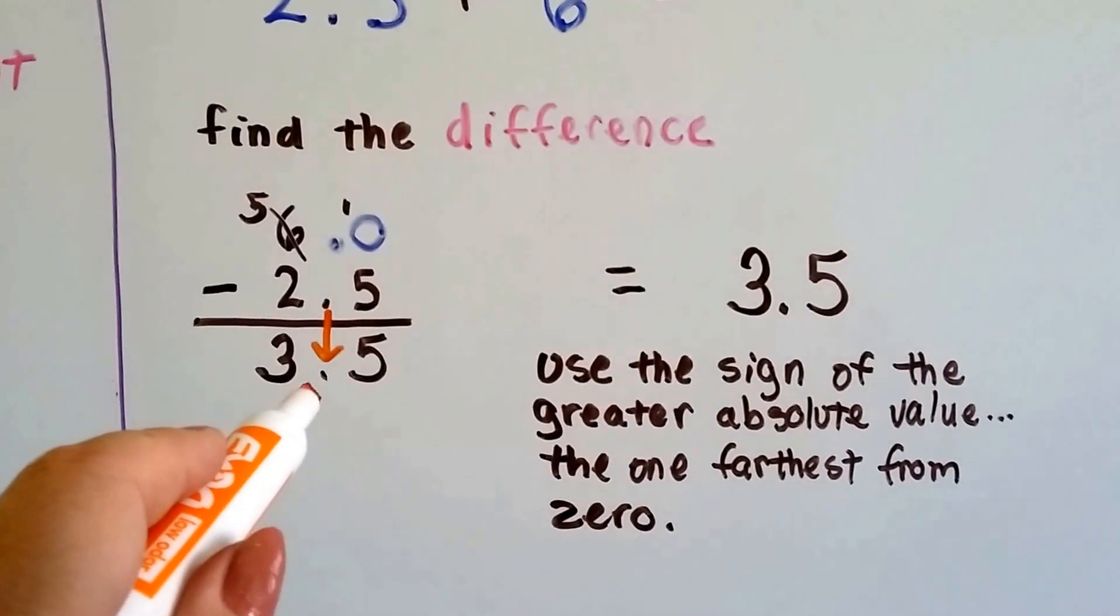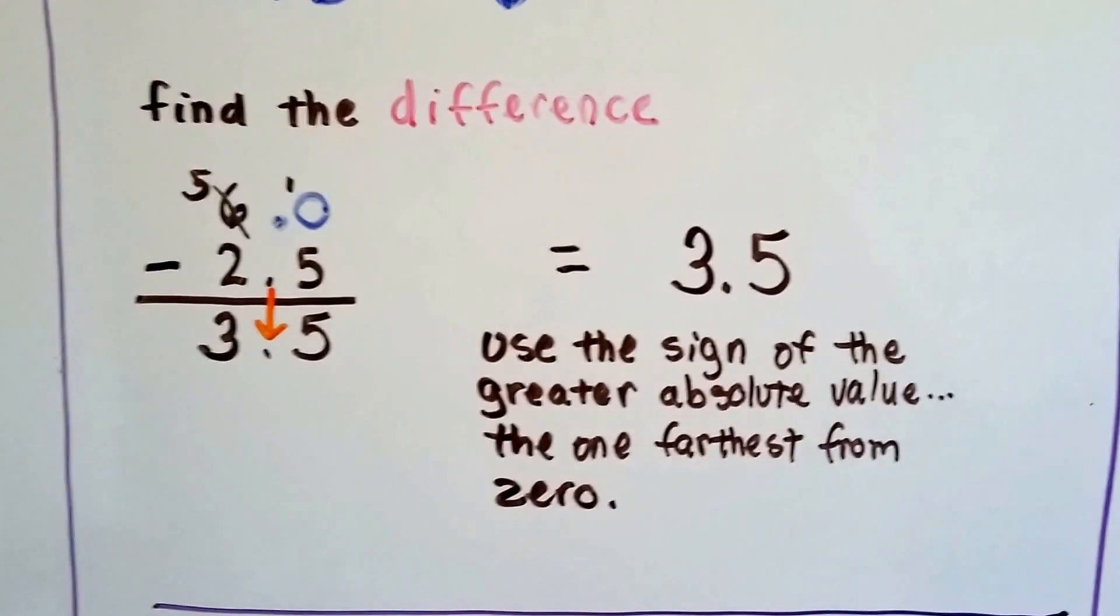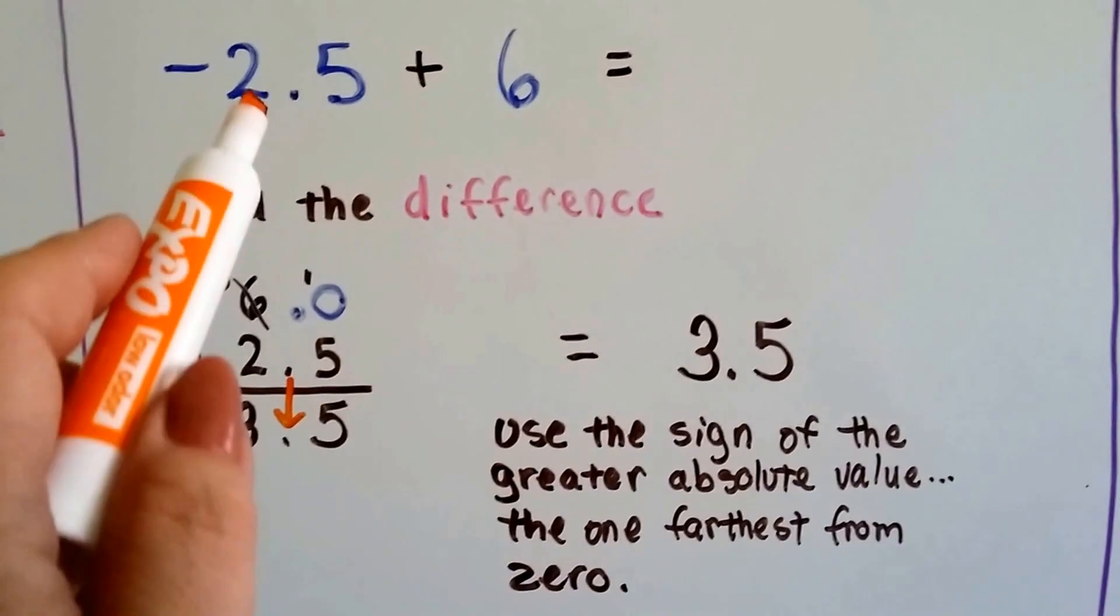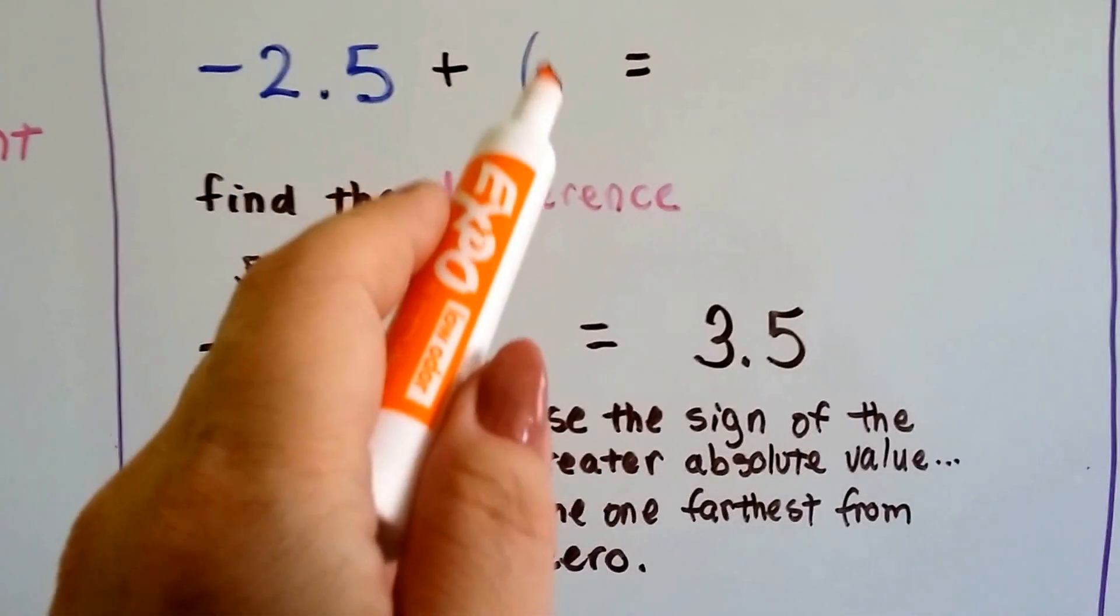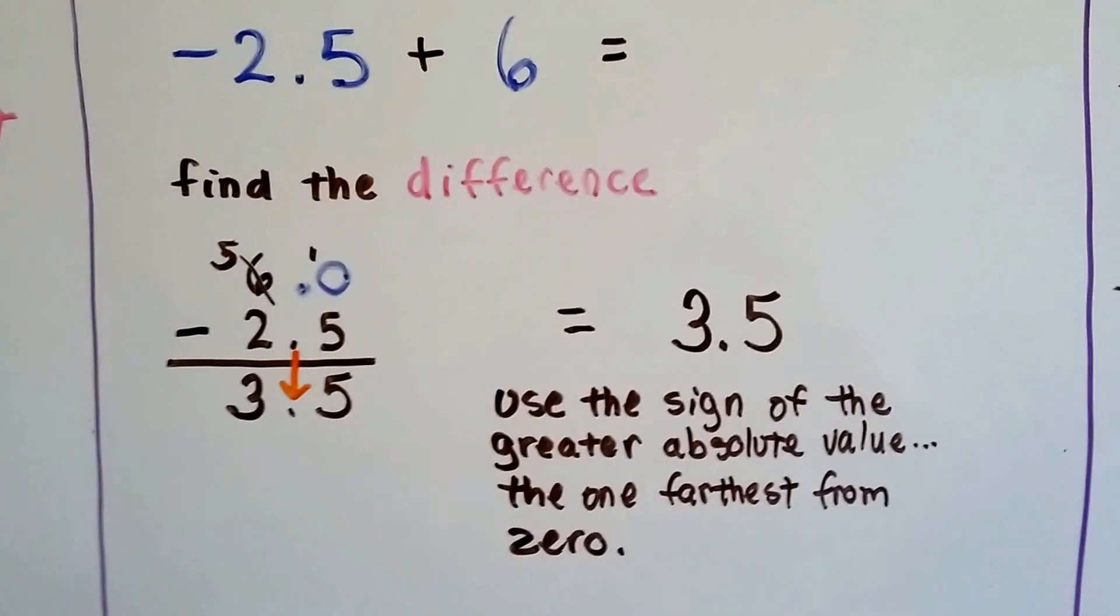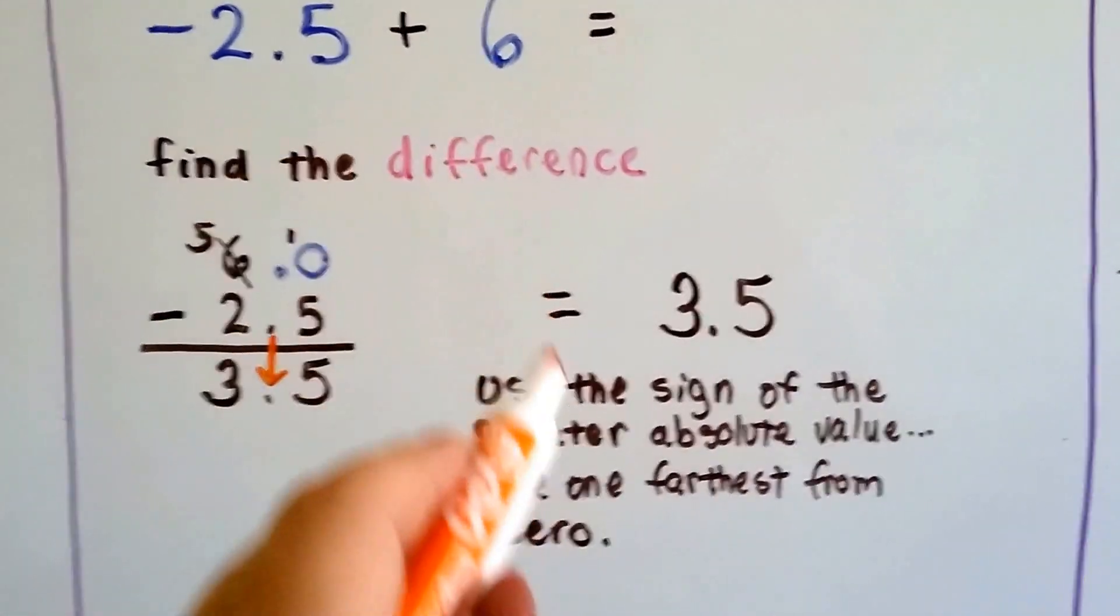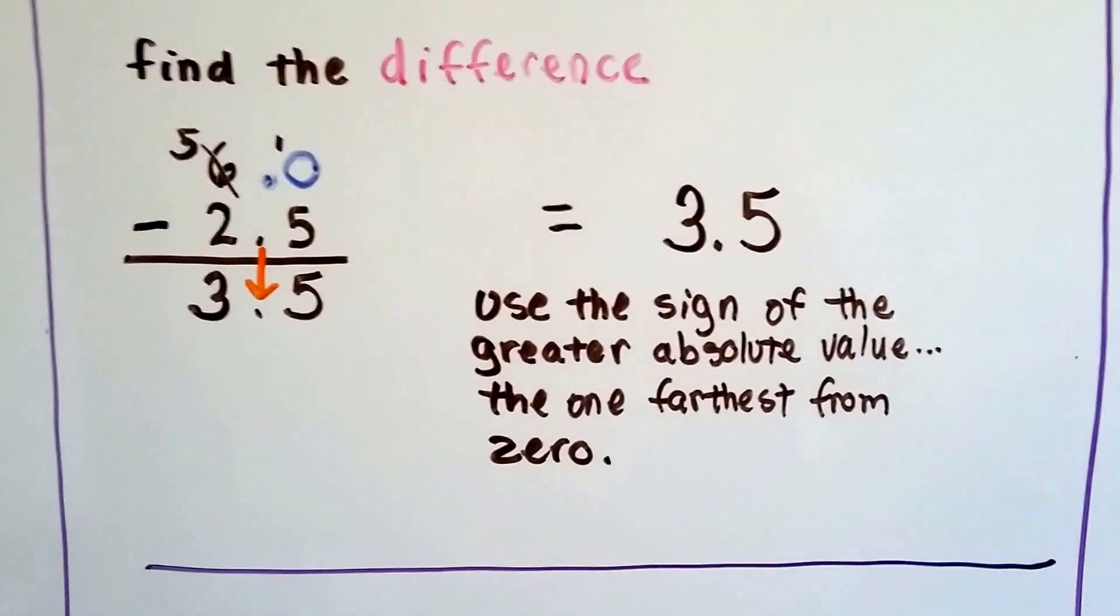because we dropped the decimal point straight down. And we used the sign of the greater absolute value that was in the equation, which is bigger and farther away from 0. 2 and a half, 2.5, or a 6. Well, the 6 is farther away from 0, isn't it? And it's a positive. So, we're going to leave this as a positive 3.5.